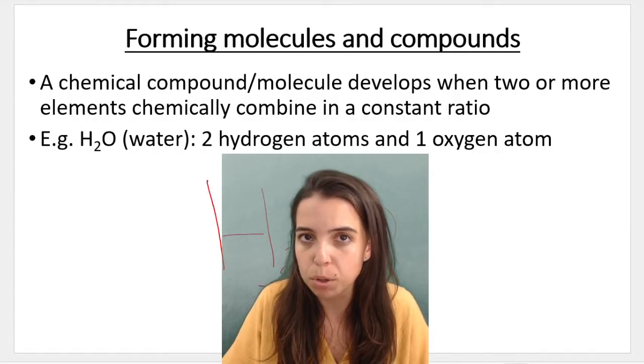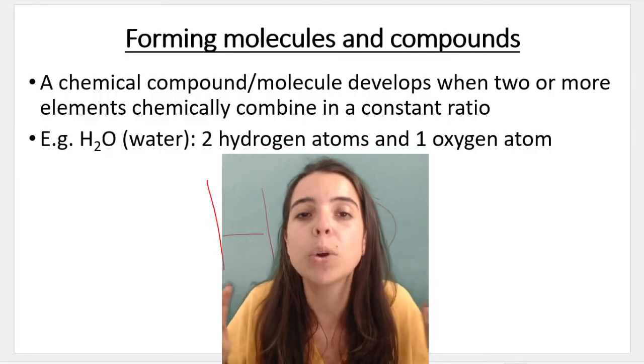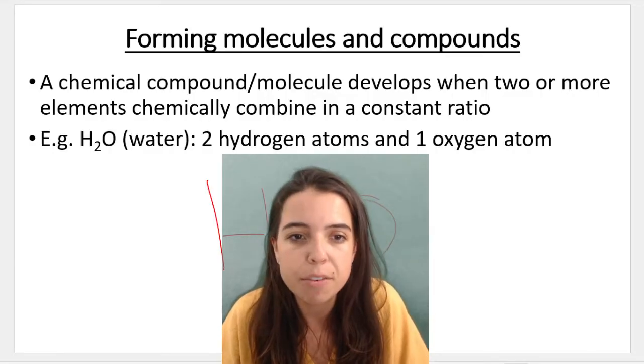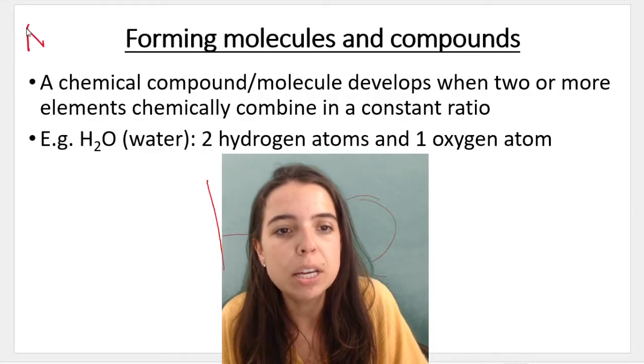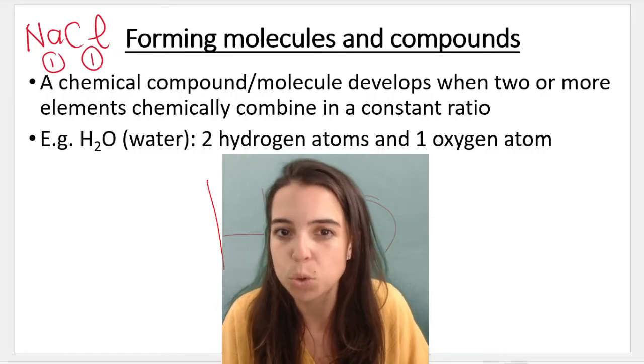So in water for example, I have two hydrogens and one oxygen, and that's how it is for one molecule of water. Two hydrogens, one oxygen. You can see that we have a fixed ratio. If I speak about sodium chloride, for every one sodium, I have one chlorine atom. It's a one-to-one ratio.